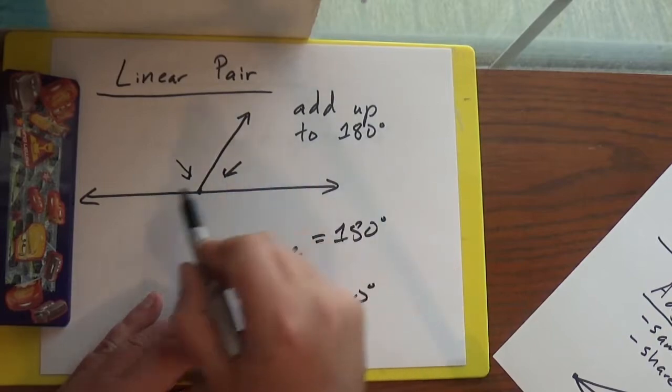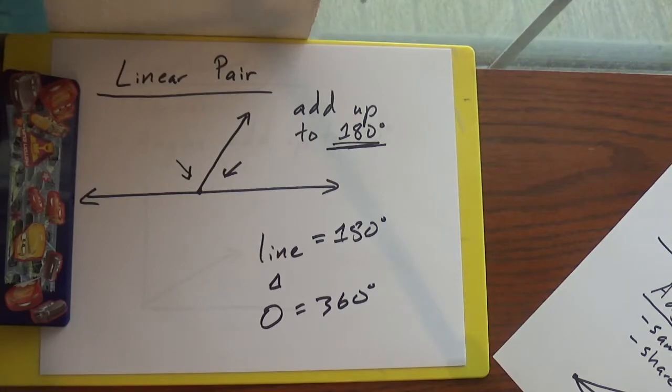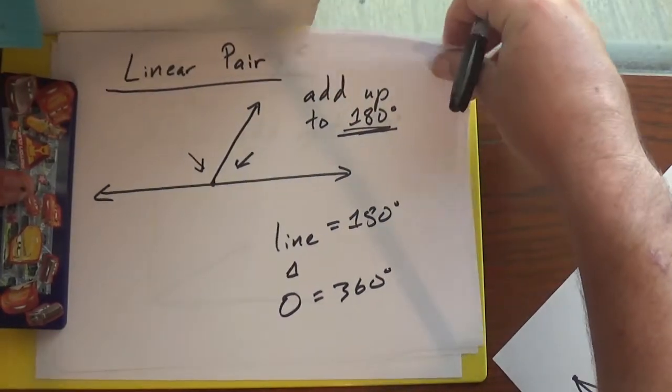So in this case, they add up to make a line. So they add up to 180. It's not a big deal, but something to know.